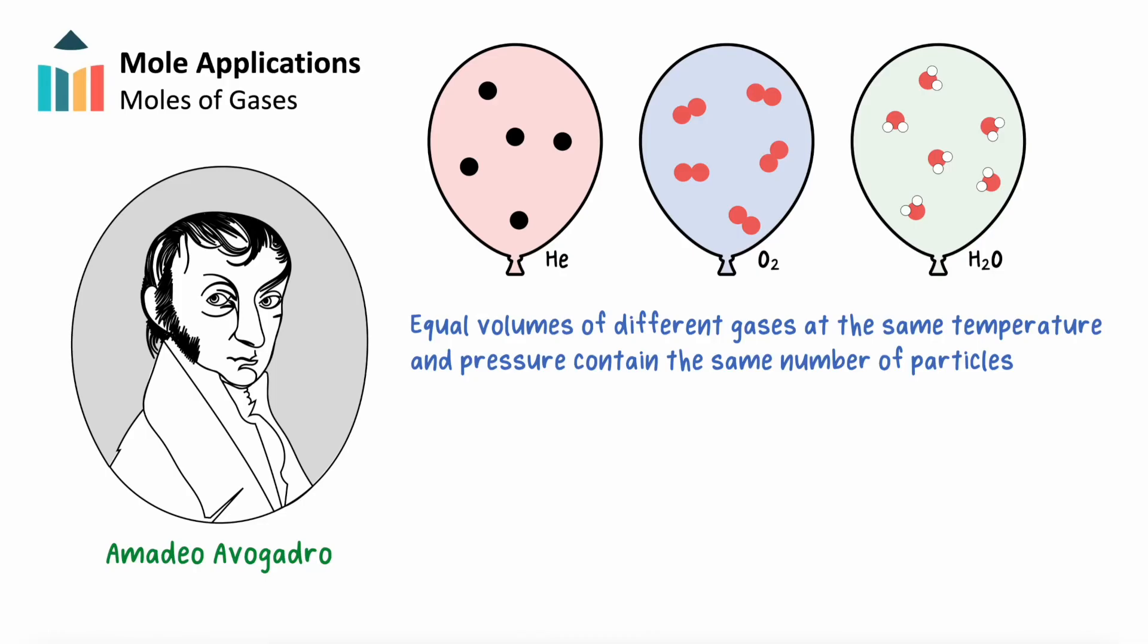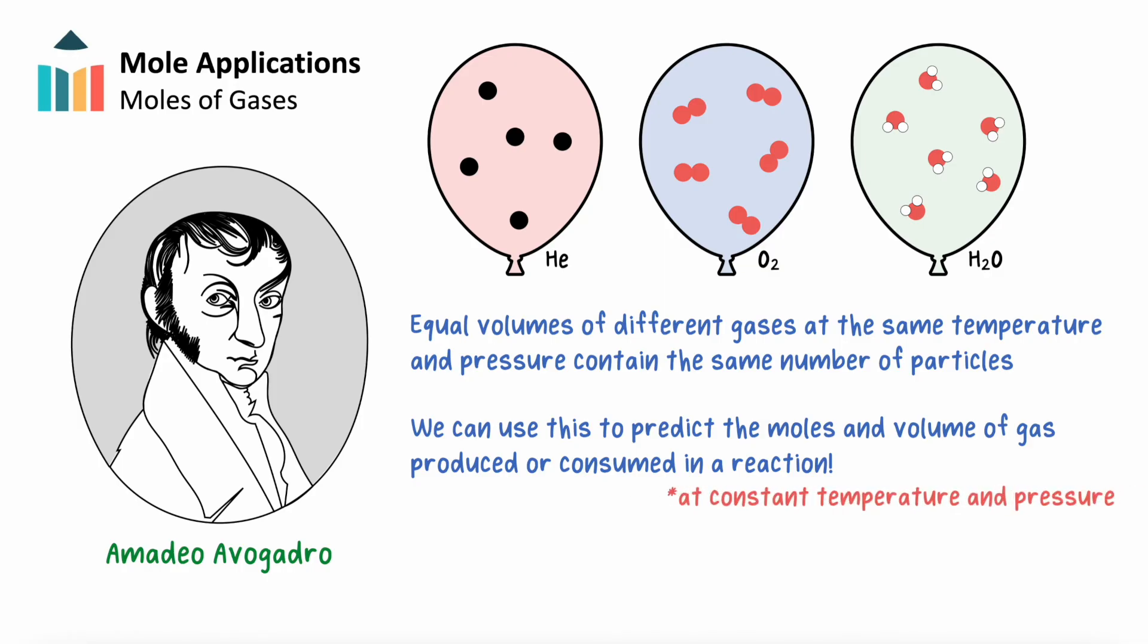In line with this observation, we can use the mole relationship found in the balanced chemical equation to predict the moles or even volume of a gas produced or consumed within a reaction. We can do this so long as we know at least one of the gas's molar or volume measurements beforehand and that the temperature and pressure remain constant.